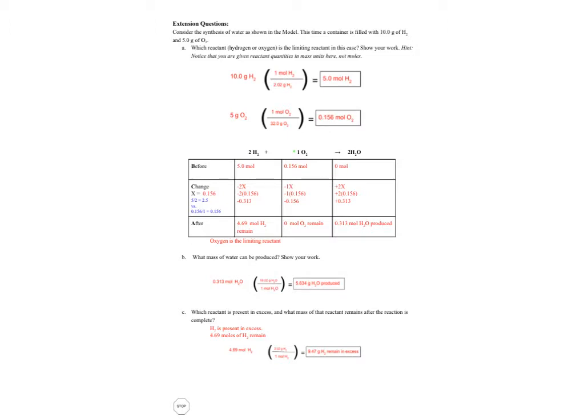So now we do our change. This is gonna be used up, so minus 2X. This will be used up minus 1X and this will be produced, so plus 2X. And those numbers in front of X come from the coefficients.